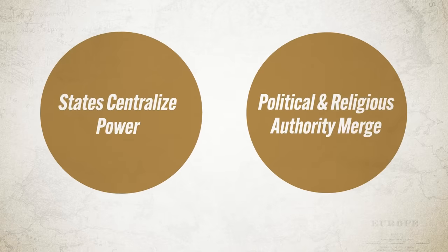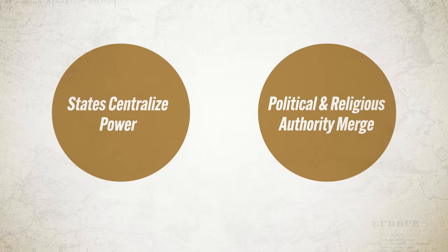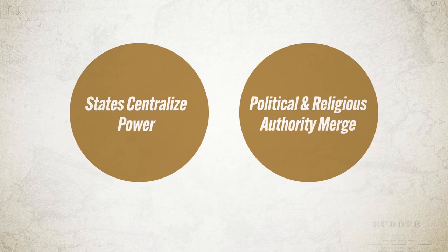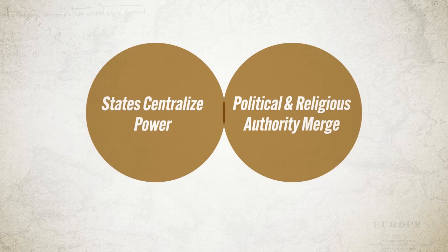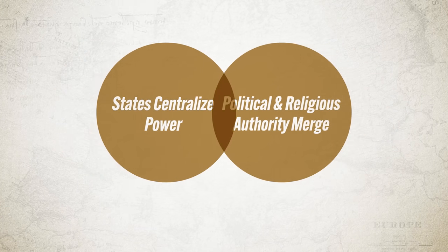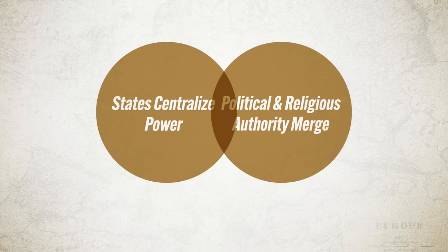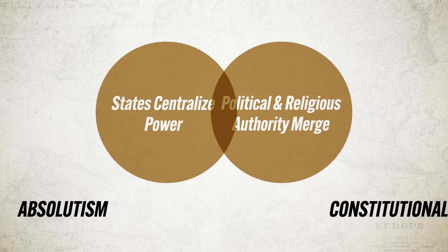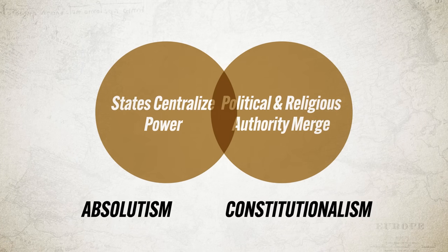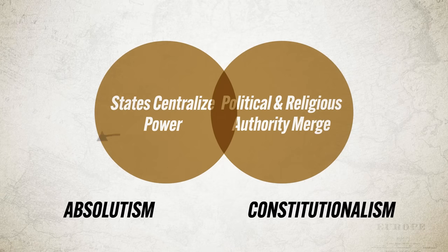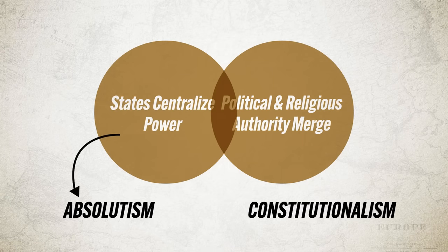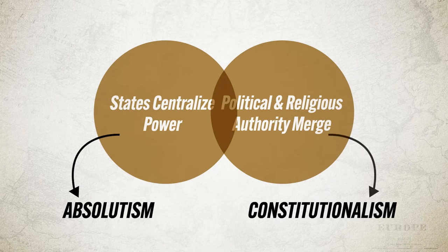Everything we talked about in the last unit sets the stage for these innovations in government. In that unit, states were working to centralize power, and the Reformation and the wars of religion helped states along that road by merging political and religious authorities and providing common enemies to unite against. As a result, those states would go one of two ways: absolutism or constitutionalism.